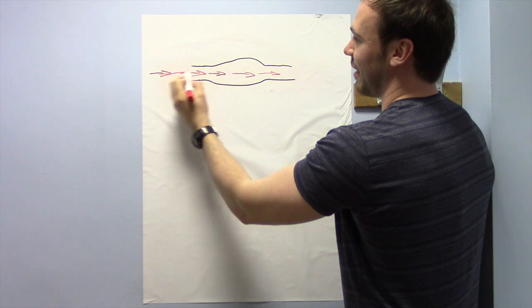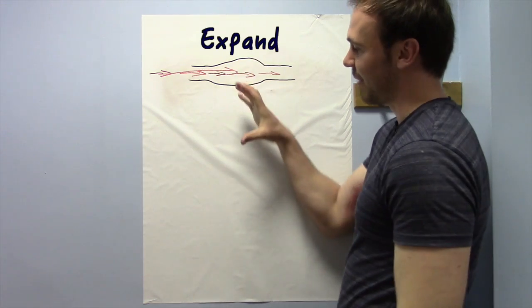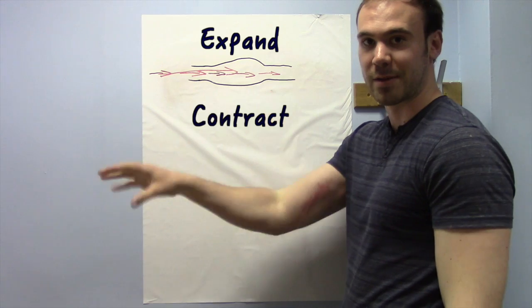So if there's a big pump of blood coming through here like this, the artery will expand, expand, and then contract as the blood goes through.